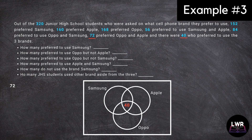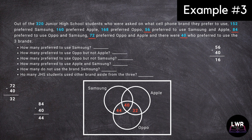Since 72 preferred to use both Oppo and Apple, we will subtract 40 from 72 to get 32. Then 84 minus 40 is equal to 44, and finally 56 decreased by 40 to get 16. In order to get the lacking data to complete the users of the Oppo brand, we will add 40, 44, and 32, which is equivalent to 116. We will subtract 116 from 168 to get 52.